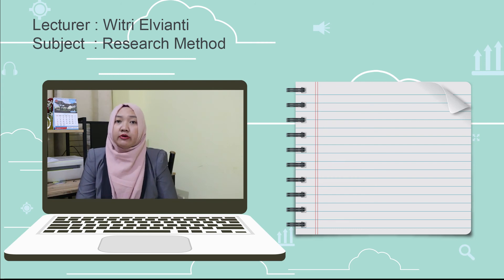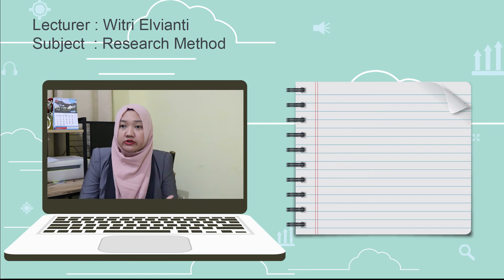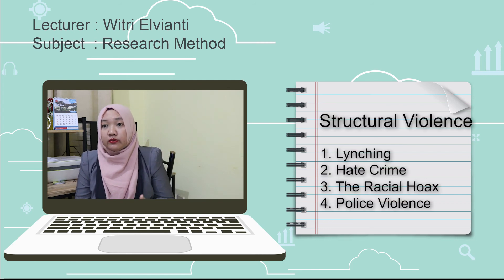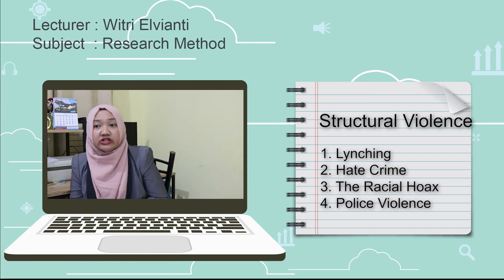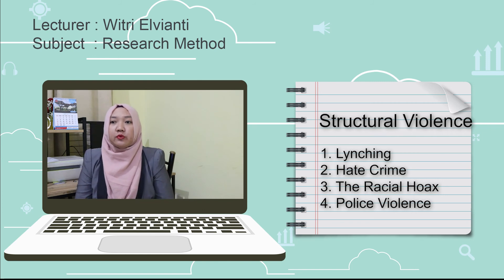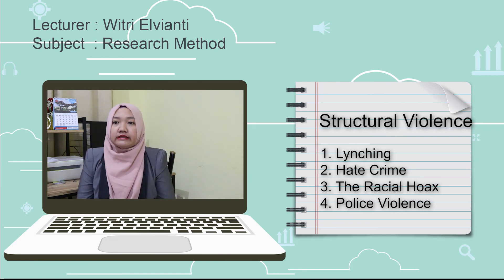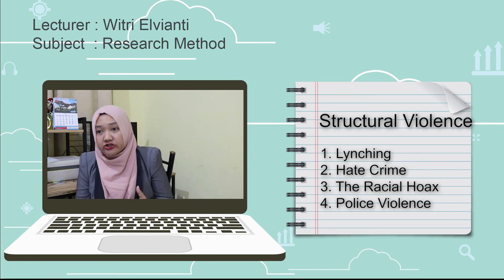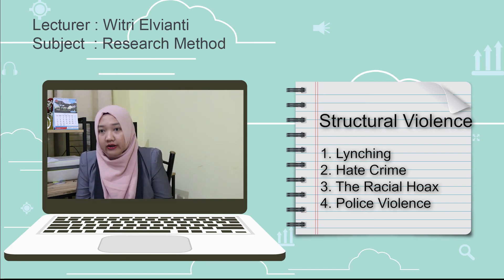The list of operational definitions of structural violence includes: first, lynching; second, hate crime; third, racial profiling; and fourth, police violence. Oliver also explained the dimensions of structural violence.